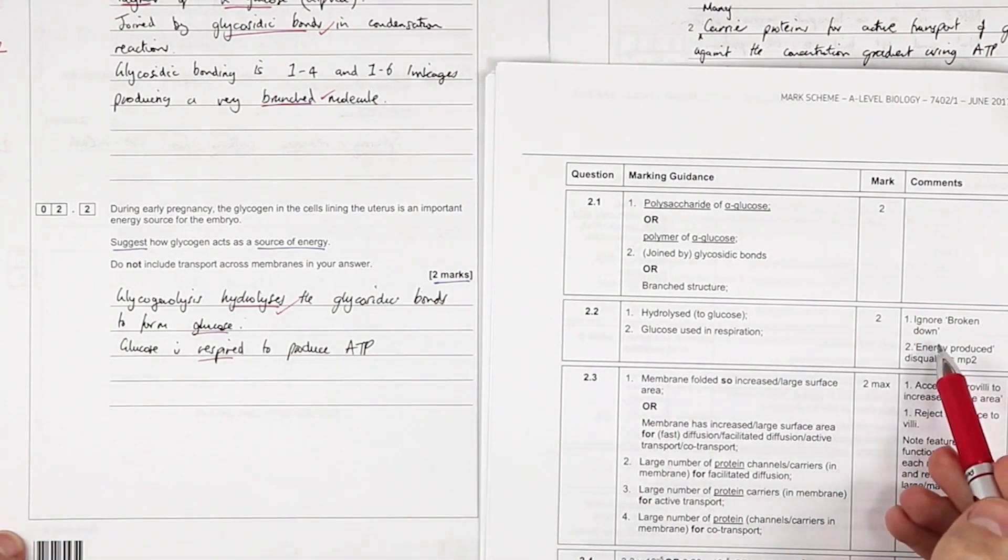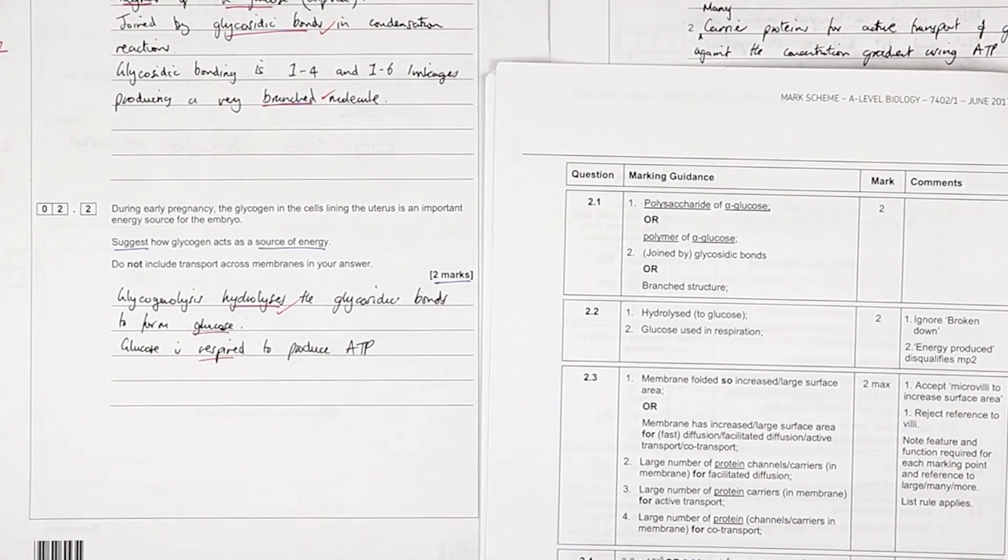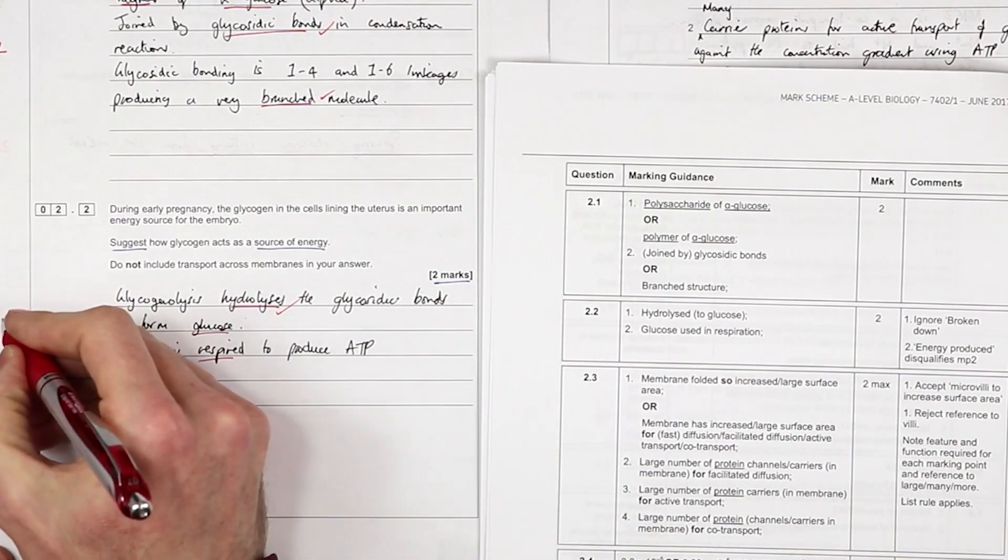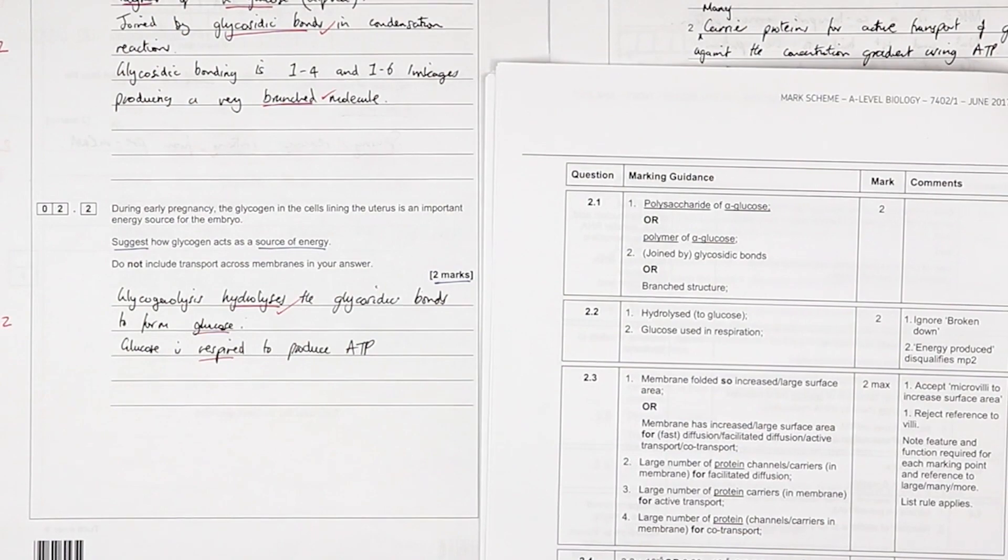Okay, so we've got hydrolyzed to glucose—hydrolysis is the main mark there—glucose used in respiration. Ignore 'broken down'; they do not want you to be saying things like 'broken down,' they definitely want you to be using hydrolysis. Wherever you can be accurate there. Someone asked me: can you say hydrolyzing hydrogen bonds? Hydrogen bonds are not broken by a hydrolysis reaction, so that's the only time when you don't want to be using hydrolysis, when you're talking about hydrogen bonds breaking.